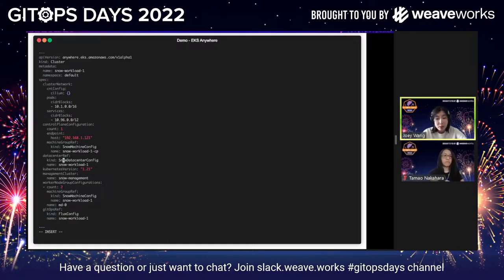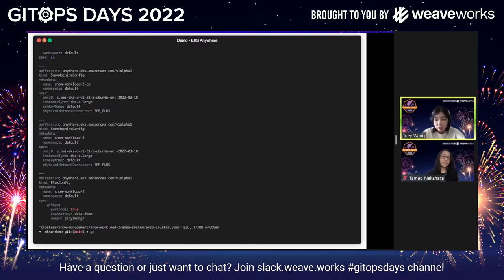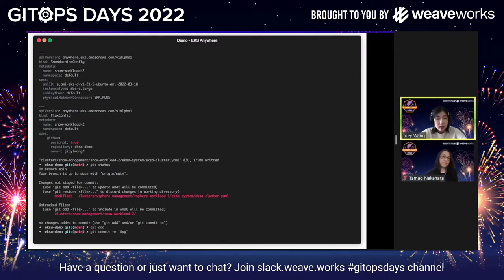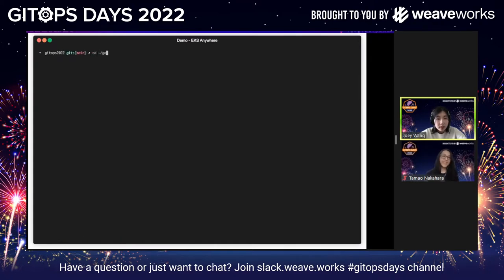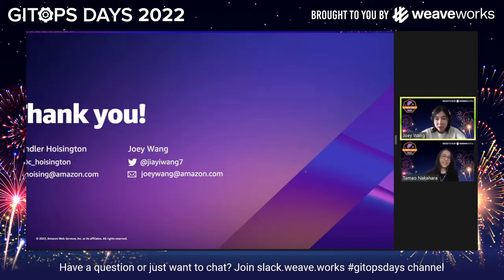That's pretty much it. The idea is very simple: for any provider EKS Anywhere supports, users should be able to use GitOps for cluster lifecycle management — creating, upgrading, and deleting clusters — whether from the same Git repo or not. I have the demo repo here if you're interested. Thank you so much, and we're always here to listen and help.